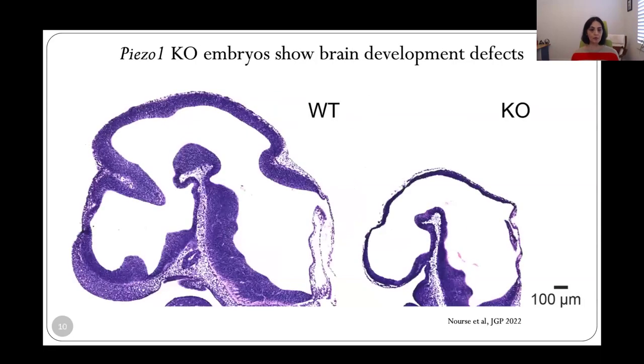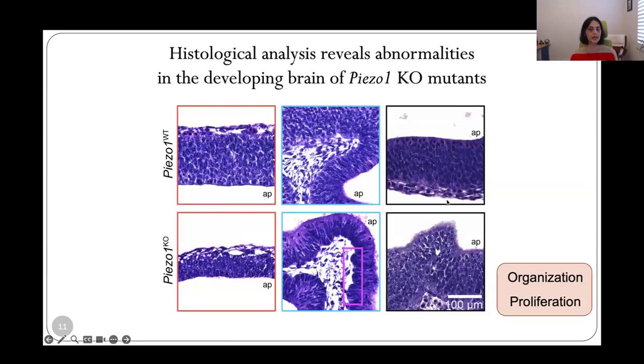To determine how Piezo1 may contribute to brain development, we examined the brains of constitutive Piezo1 knockout mice, and these are mouse lines made by Ardem's lab. We found that the Piezo1 knockout mice, and this is a global knockout, had a strikingly different morphology compared to the wild-type littermates. It showed thinner neuropithelium in all the regions that looked quite underdeveloped. And then when we zoomed in, we saw that the organization of cells is disrupted. You see uneven borders at both the basal as well as the apical edge. So both the organization as well as the proliferation, like the number of cells here is smaller, both are affected.